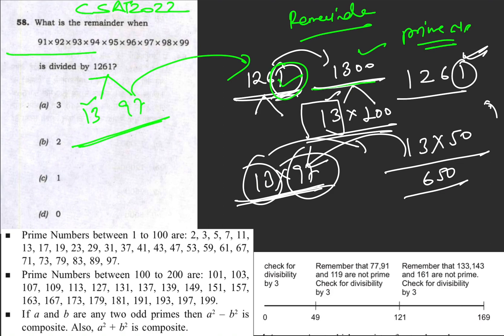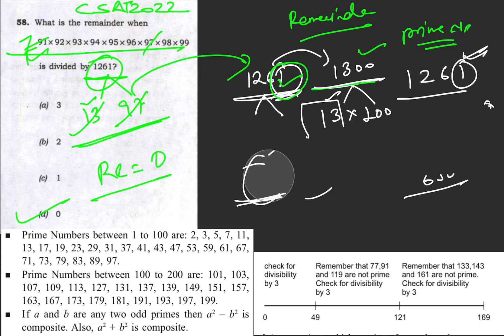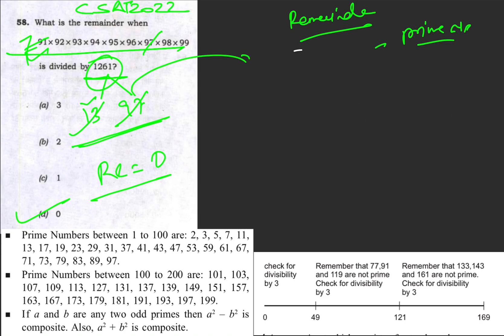Once I get the factorization, I simply divide. The factors cancel on both sides, so 1261 completely divides the given number and therefore the remainder is 0. The answer is 0. This question was about prime numbers — you should remember the key prime numbers.